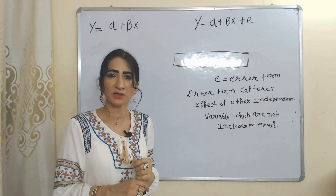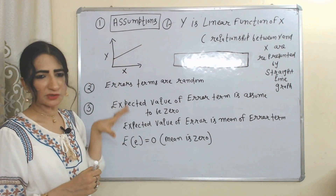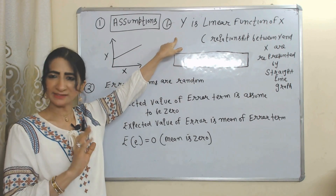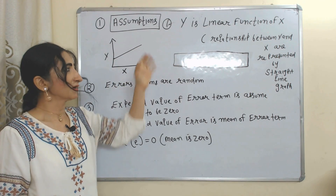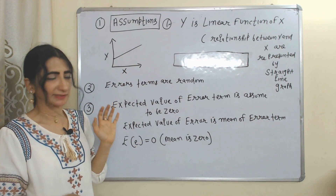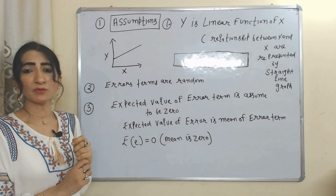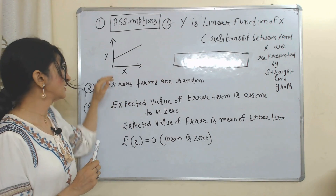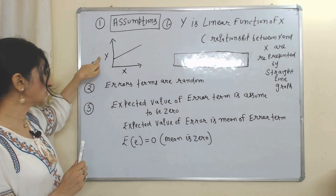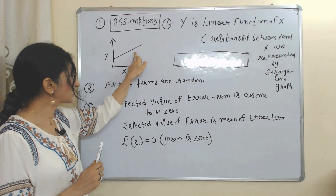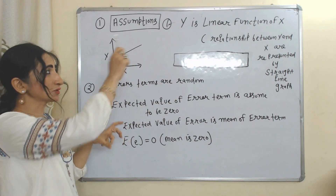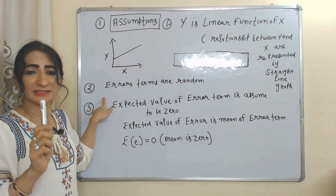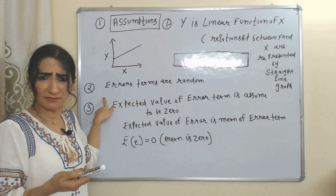Now we look at the assumptions of this model. First, y is a linear function of x — the relationship between y and x is represented by a straight line in the graph. Here we have the x variable and the y variable, and the straight line shows the relationship between y and x.